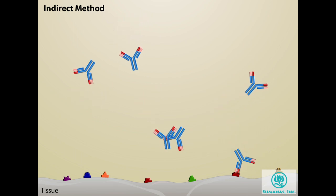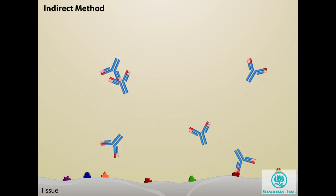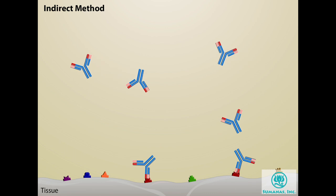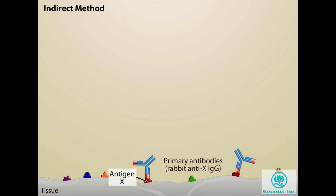The primary antibody binds directly to the antigen of interest. Excess antibody is then washed away. In this example, the primary antibody is an IgG molecule made in rabbits that recognizes an antigen we will call antigen X. Thus, the antibody is called rabbit anti-X IgG.